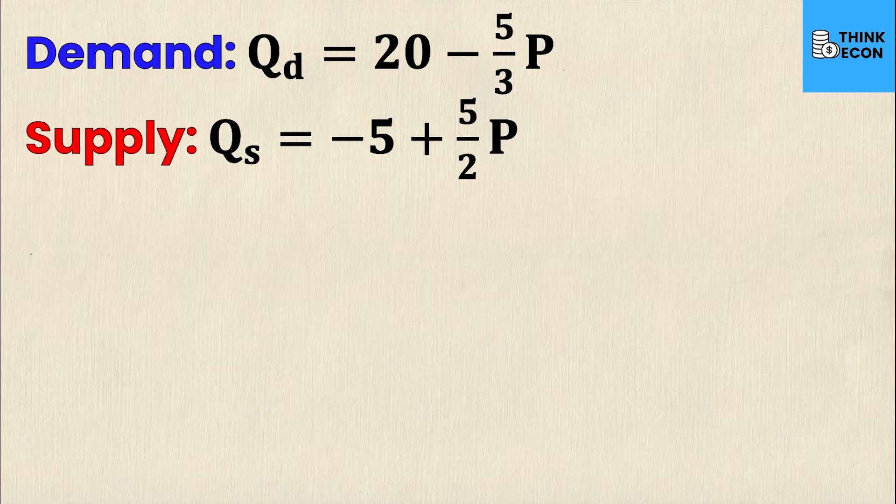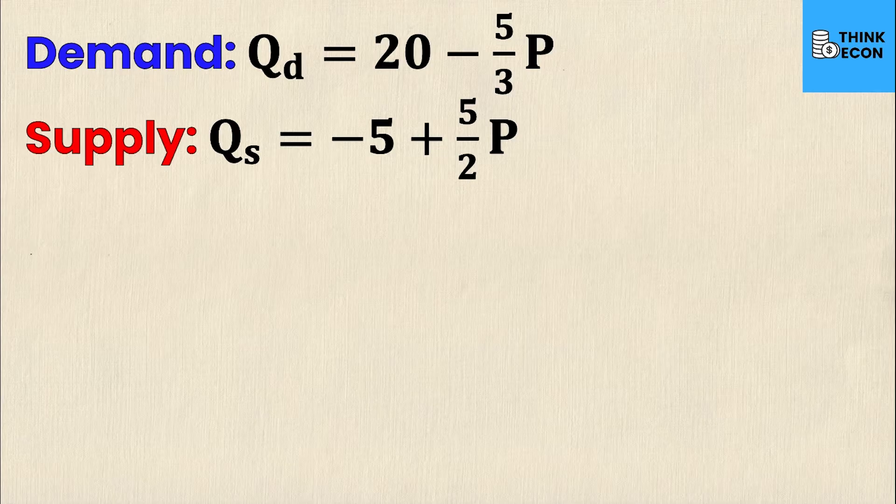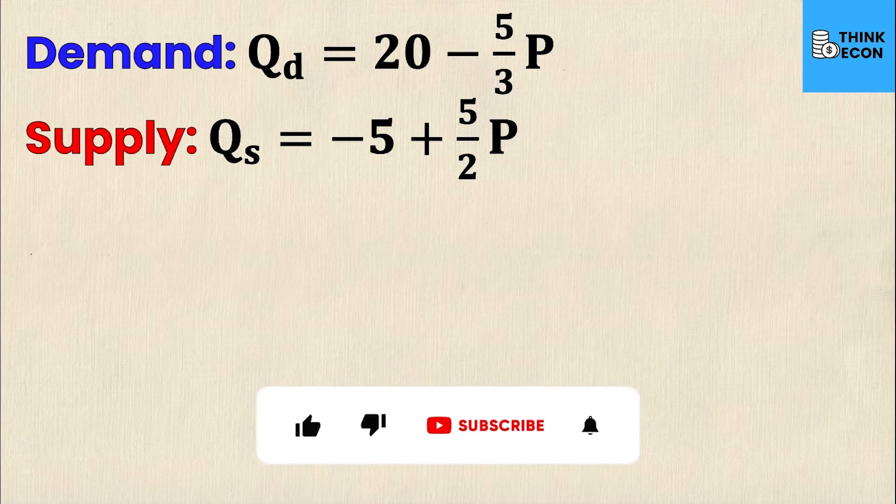You'll notice in the demand equation there's a negative coefficient on P and that makes sense because quantity demanded and price are negatively related as per the law of demand. On the supply equation, you'll notice there is a positive coefficient on price and that also makes sense because there's a positive relationship between price and quantity when you're talking about supply.